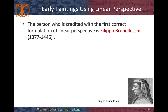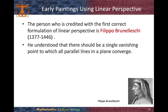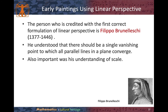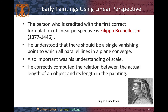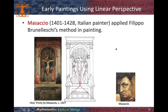The first person who used correct linear perspective is Filippo Brunelleschi. He understood that there should be a single vanishing point to which all parallel lines in the plane converge. He also understood the importance of scale, correctly computing the relationship between the actual length of an object and its length in the painting. Masaccio also applied Brunelleschi's method — you can see all the parallel lines converge and vanish to a single point.